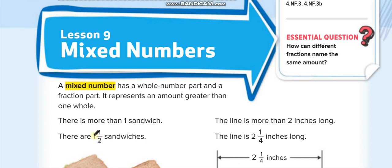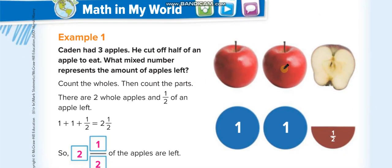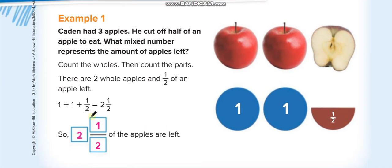When we write a whole number and a fraction together, that is known as a mixed number — like 2 whole and 1 over 4. We write whole numbers when we have something complete, and fractions when we have something incomplete. When we have both together, we write mixed numbers.